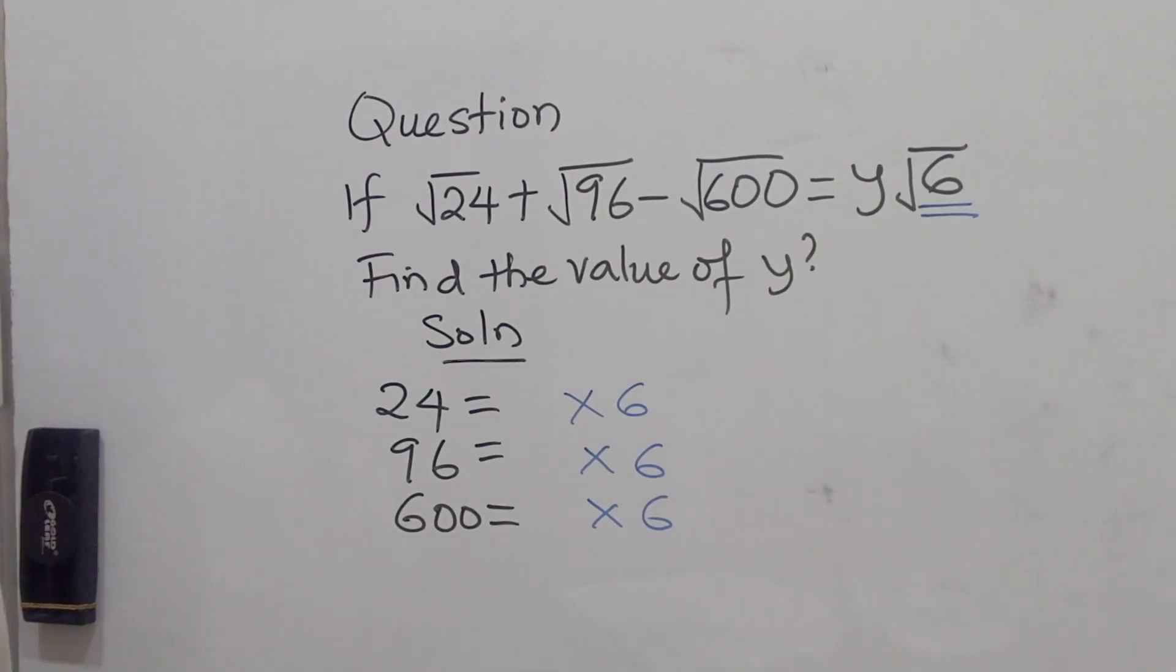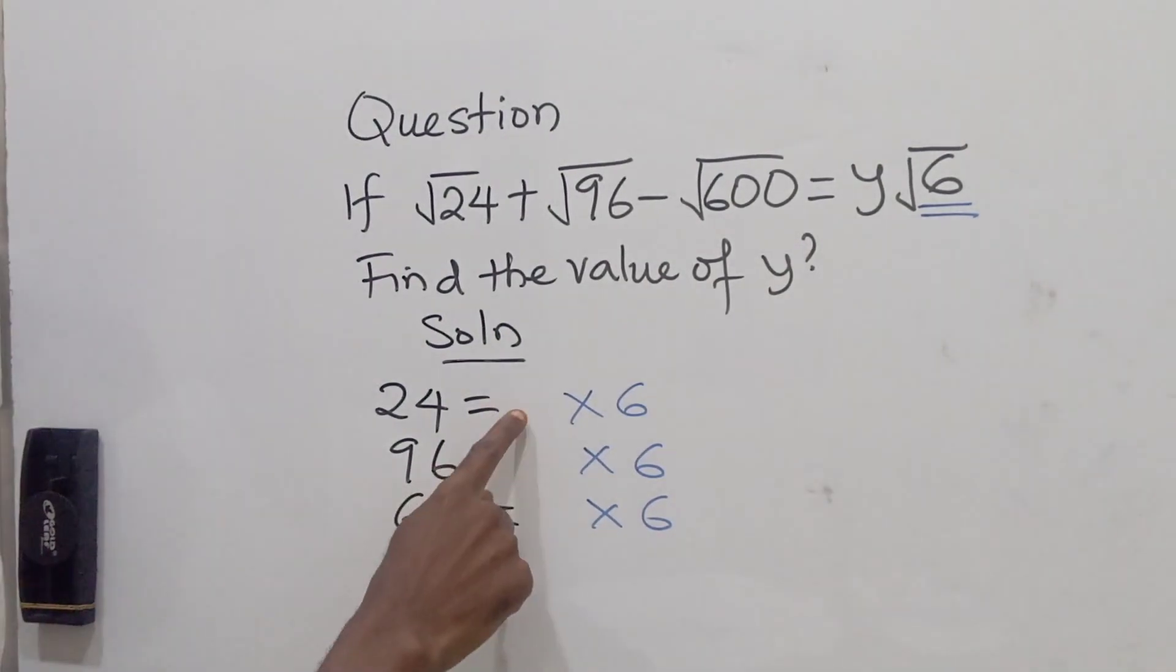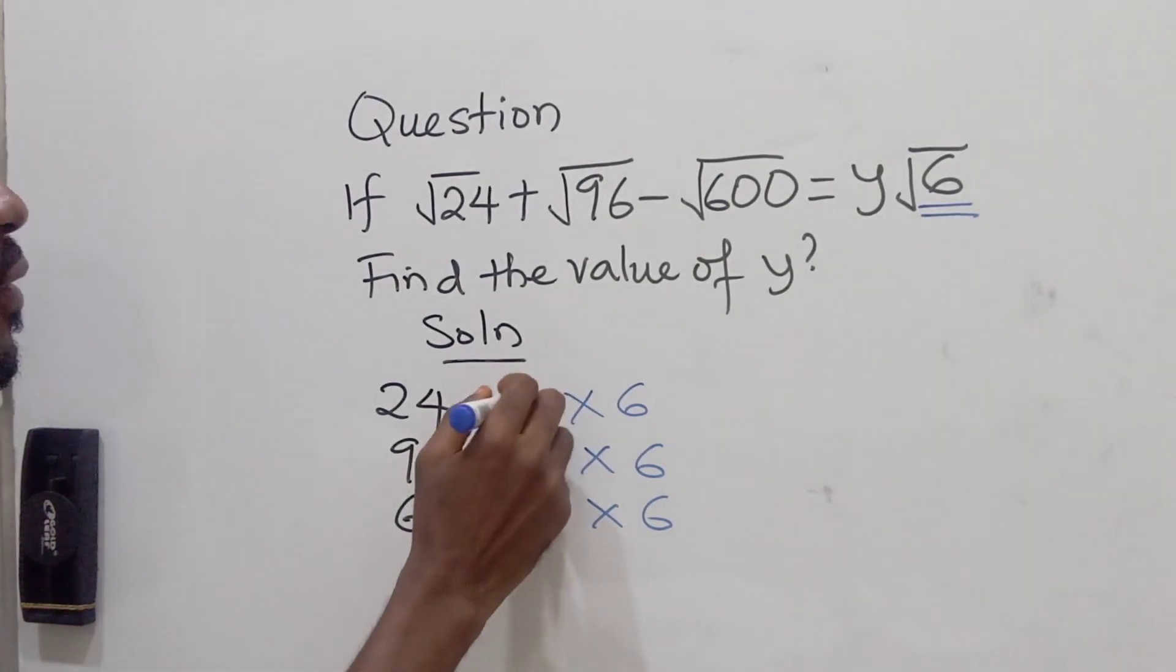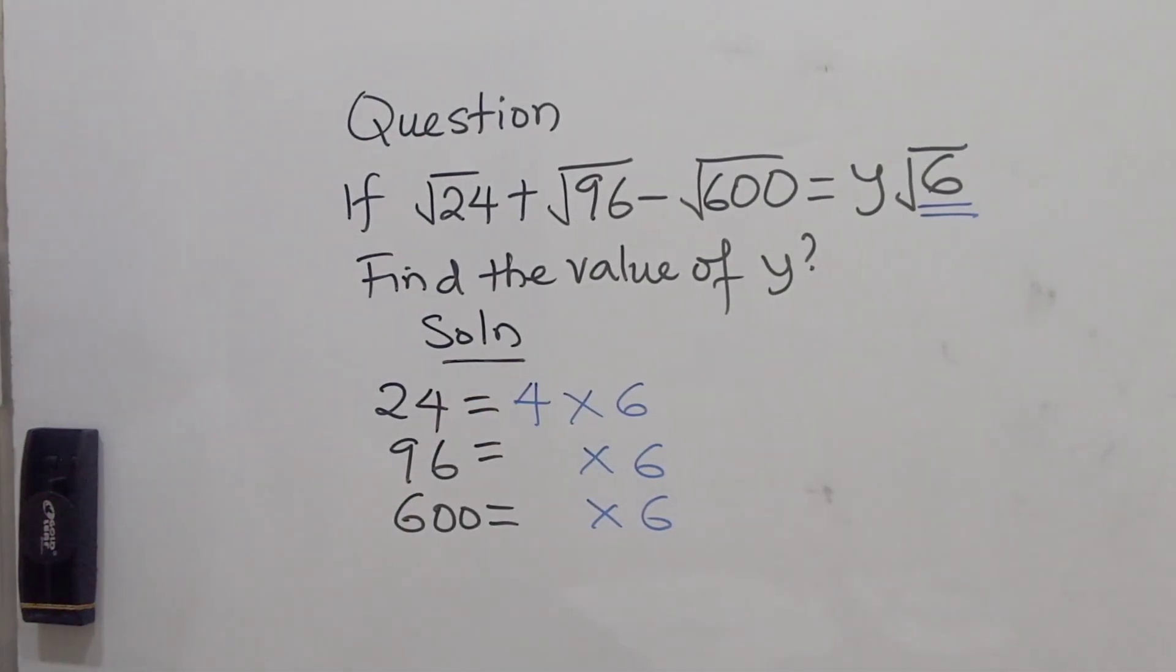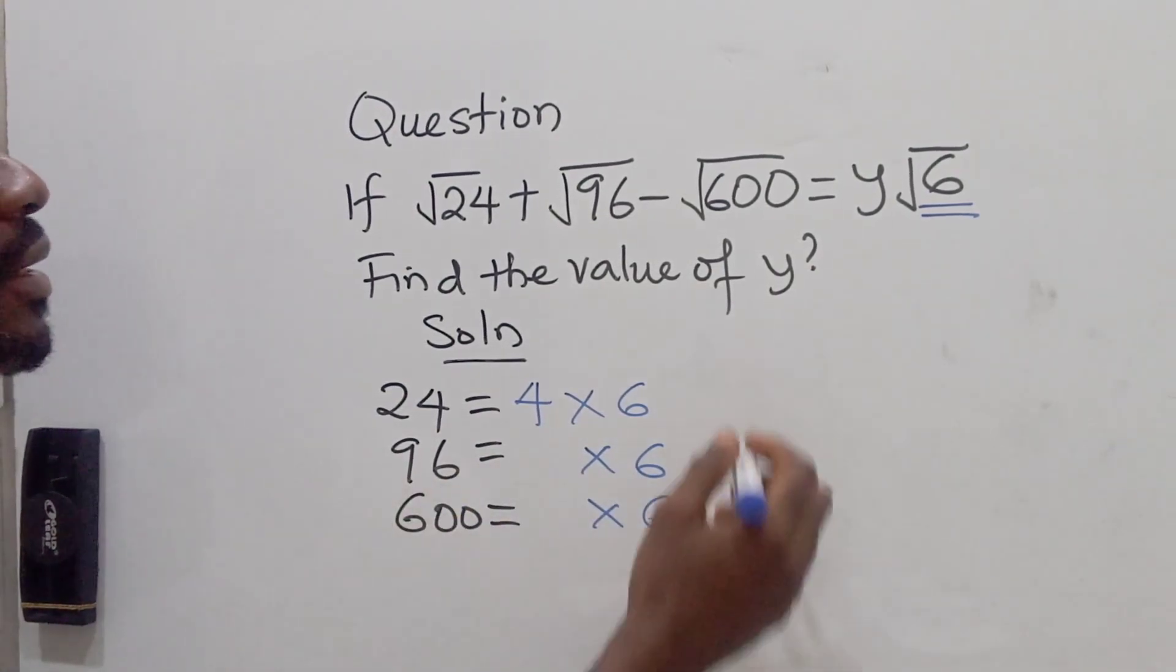So the question is, what times 6 will give us 24? We simply know it's 4, and that's a perfect square. What about what times 6 will give us 96? Let's check it.